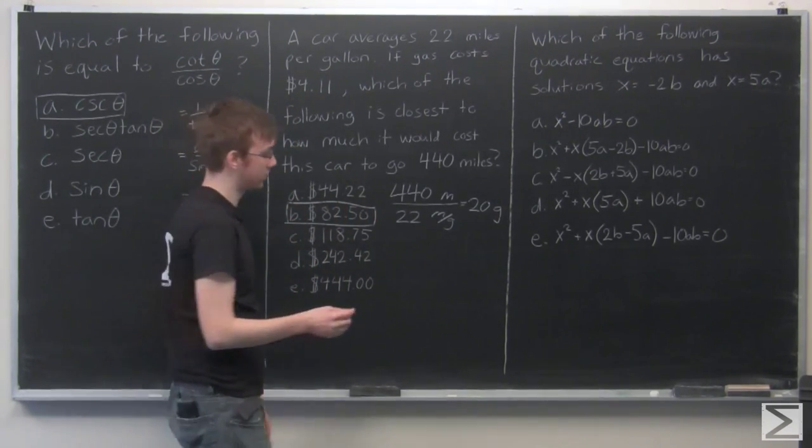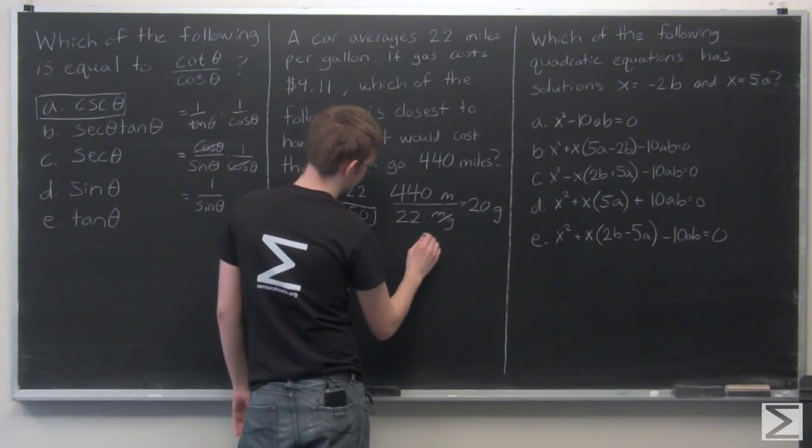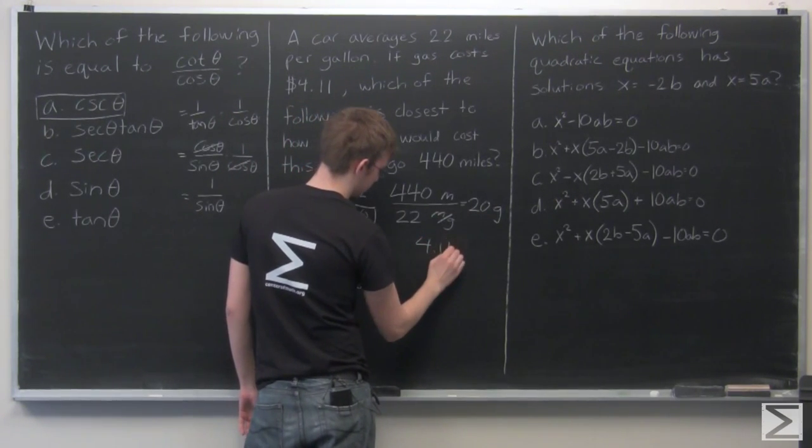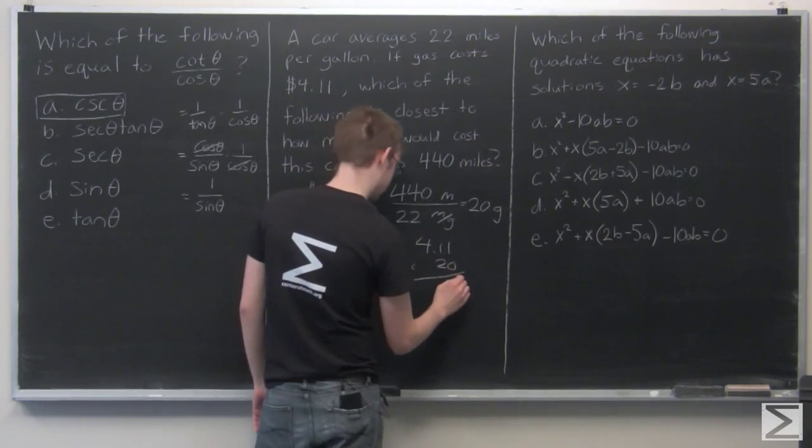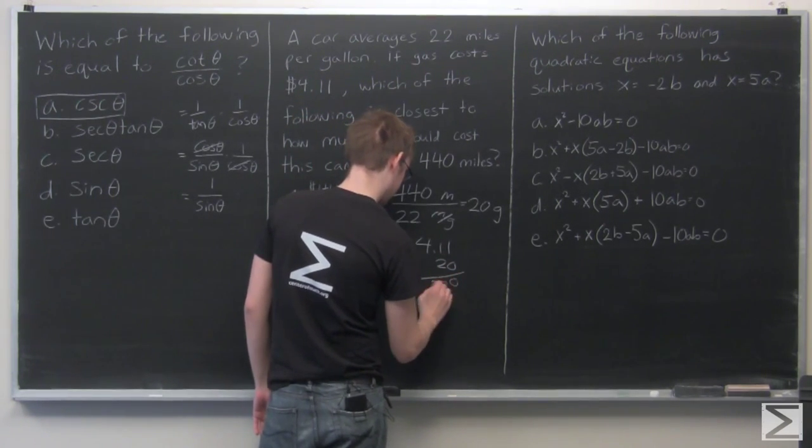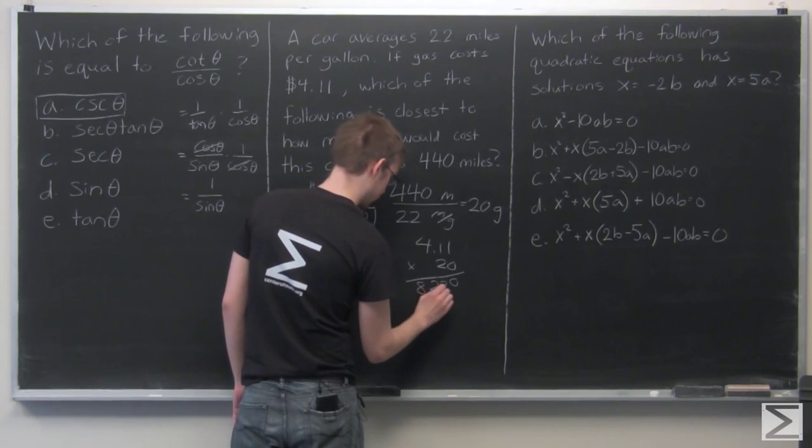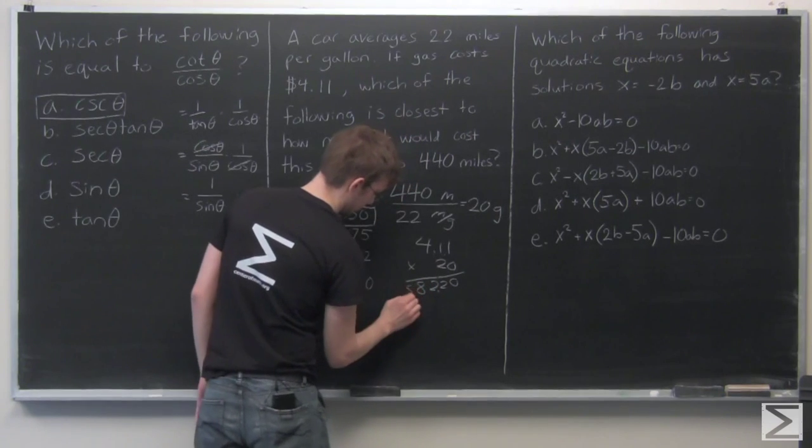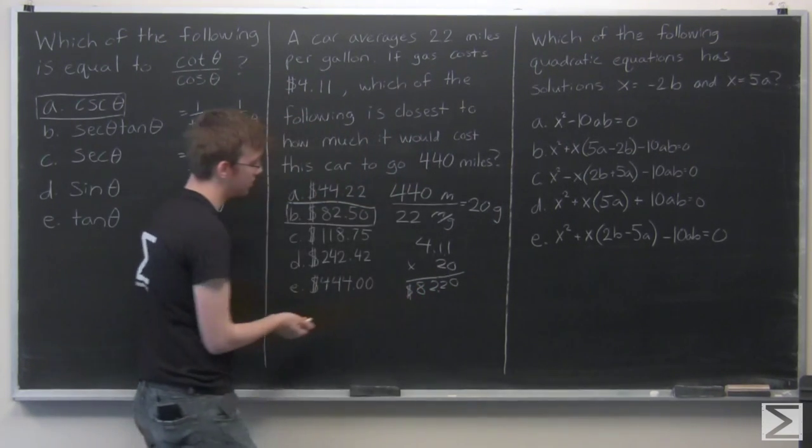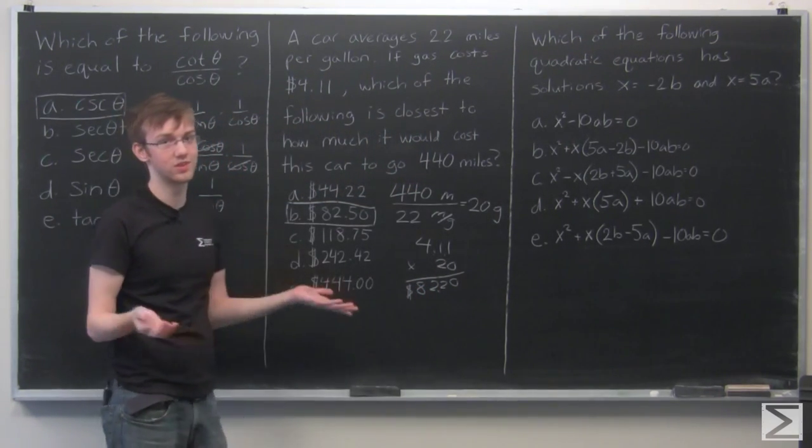If you actually want to calculate this out, 20 times $4.11. The exact value is $82.20. So as you can see, that's really close.